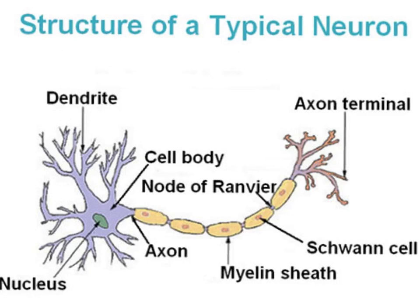It then leads into the cell body, which processes these synapses, and then proceeds to send them down the axon. The axon is a long, slender projection of a nerve cell that typically conducts electrical impulses away from the neuron's cell body. In an axon, it's broken up into many different parts that help send the message away.